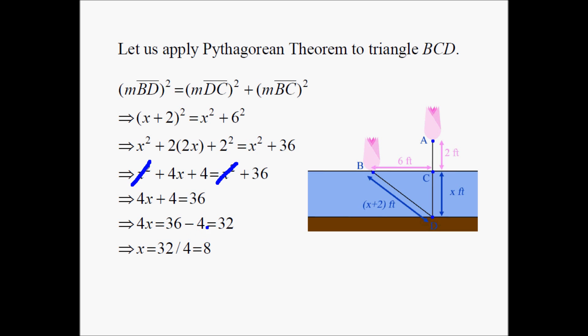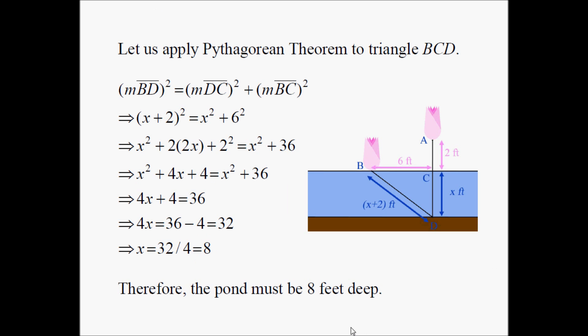Rearranging: subtract 4 from both sides to get 4x equals 32. Dividing both sides by 4 gives x equals 8. And x is the depth of the pond, which turns out to be 8 feet. That's the answer — 8 feet. It's a pretty challenging problem, but not beyond us, actually.